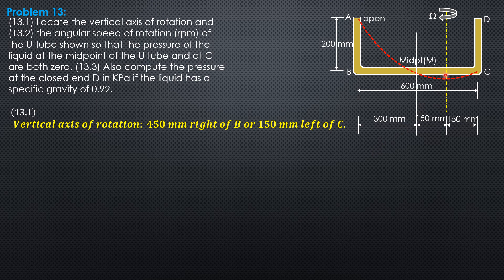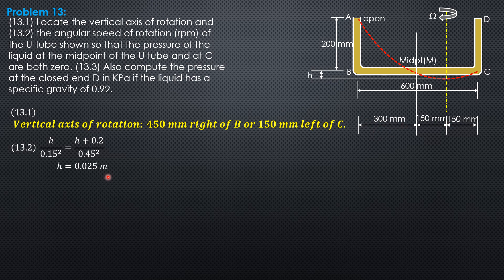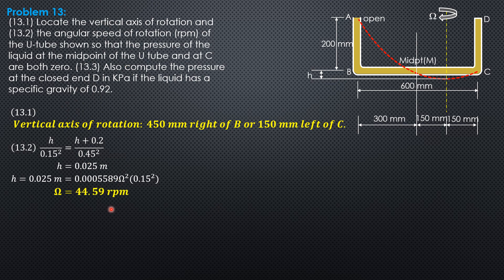For the second part, let's solve for the angular speed of rotation. Let's denote the height of the vortex or paraboloid from vertex to BC as H. Then by the squared property of the parabola: H / 0.15² = (H + 0.2) / 0.45². Solving for H gives H = 0.025 m. Substituting into the formula H = 0.0005589 × ω² × r², with r = 0.15, we can solve for ω = 44.59 RPM.